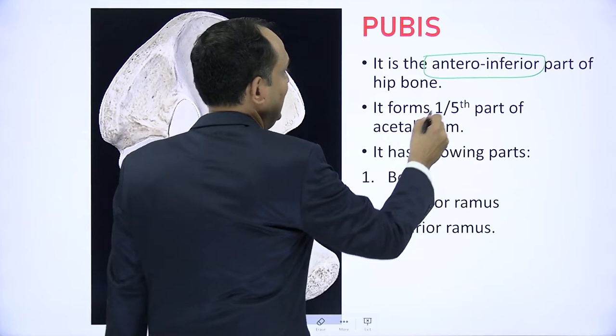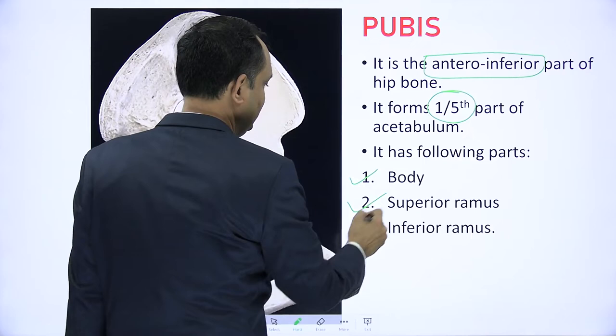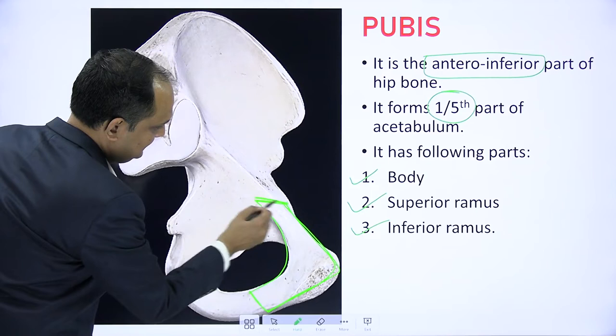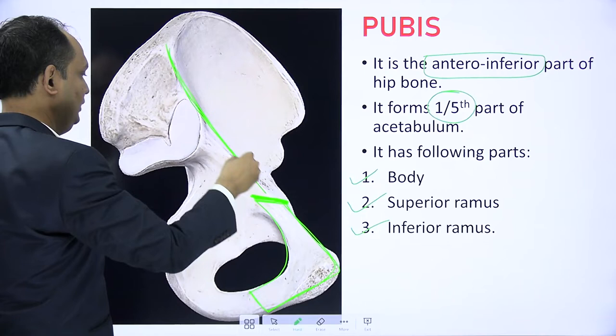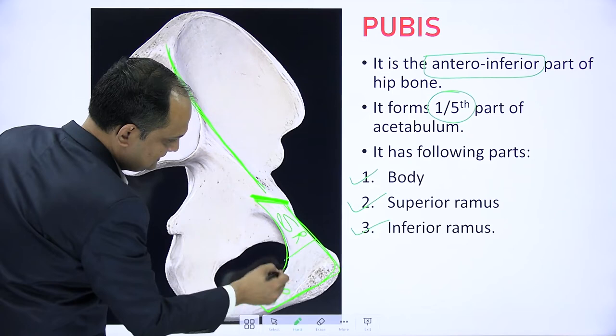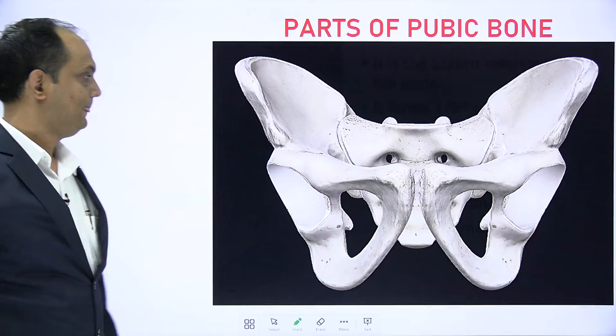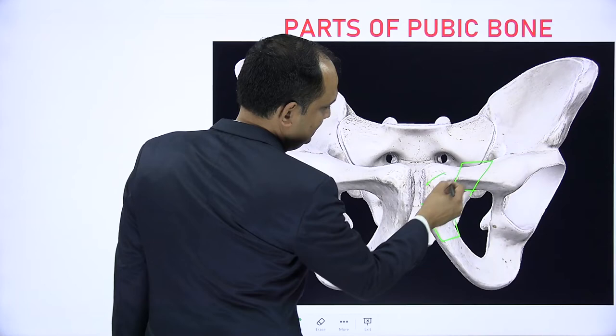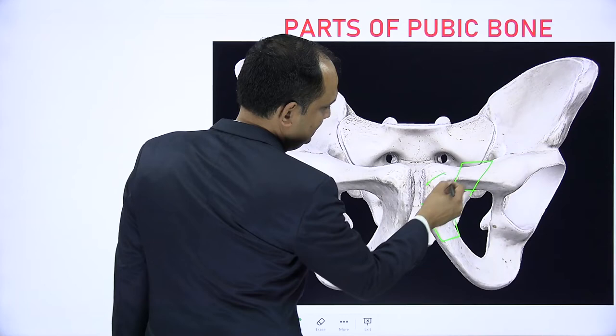Now the pubis: it is placed antero-inferiorly and forms one-fifth of the acetabulum. It has a body, superior ramus, and inferior ramus. The central flat area is known as the body of the pubis, with the superior ramus above and inferior ramus below. The body makes a joint with the opposite side known as pubic symphysis.